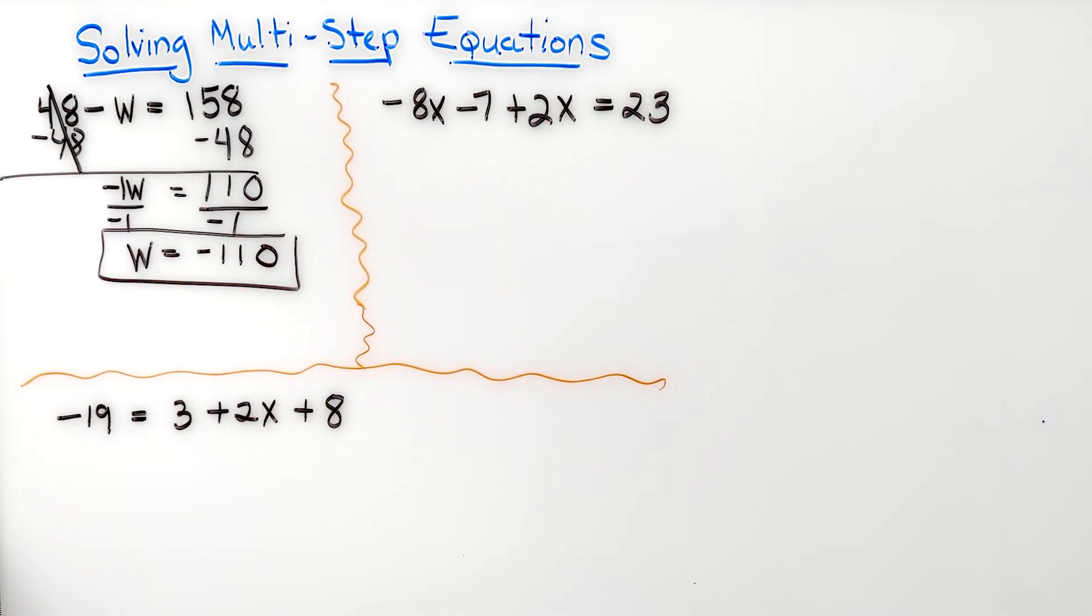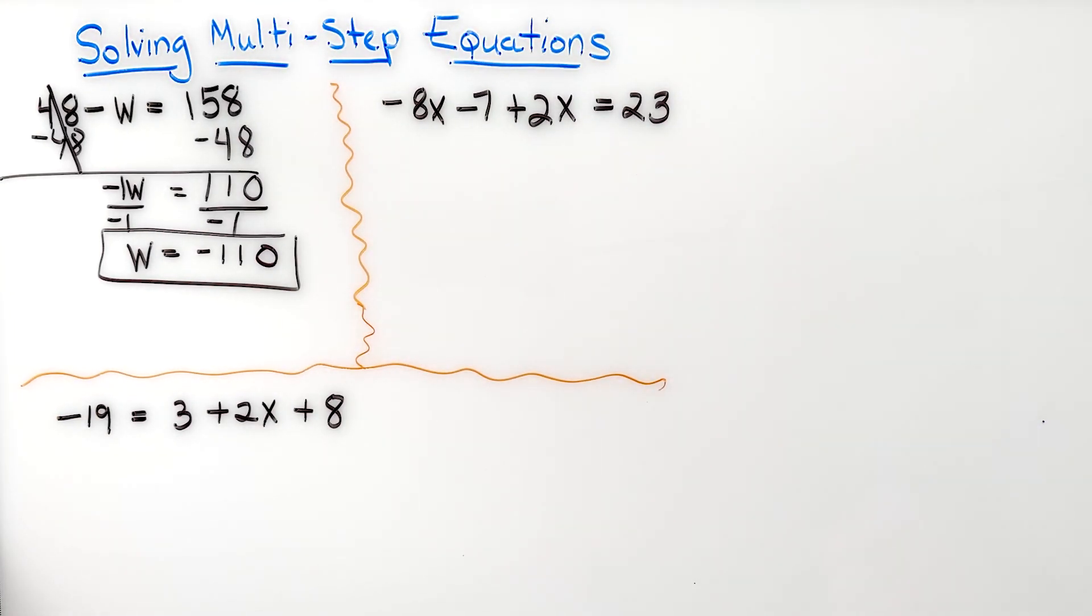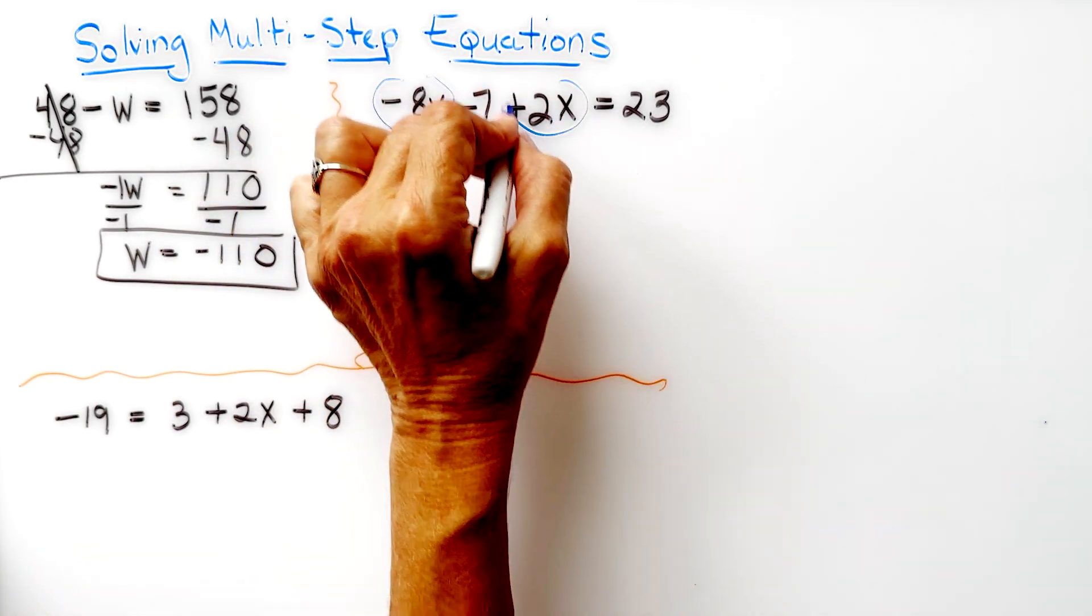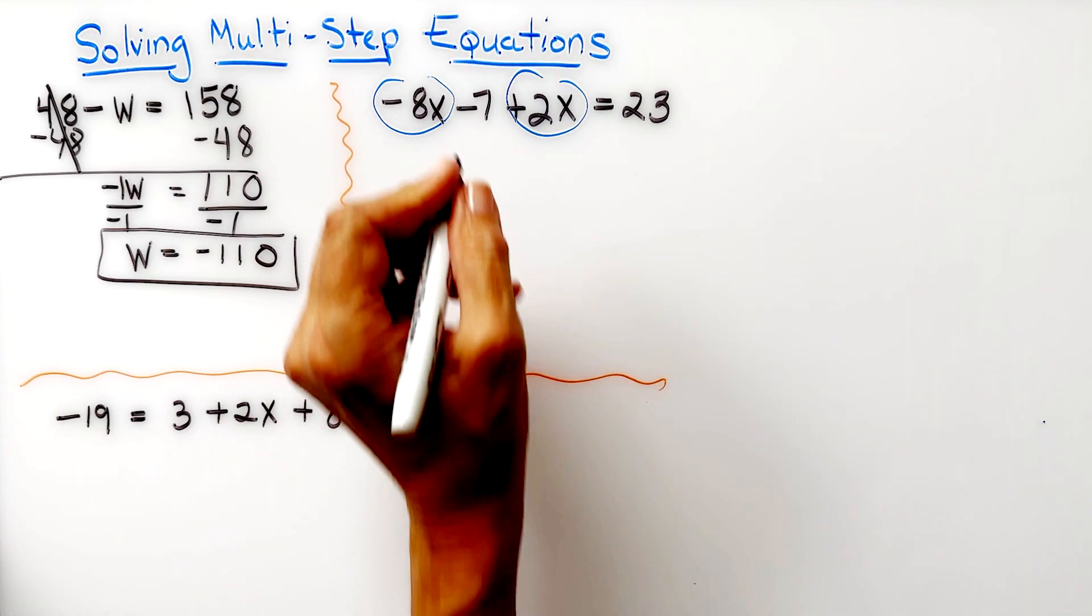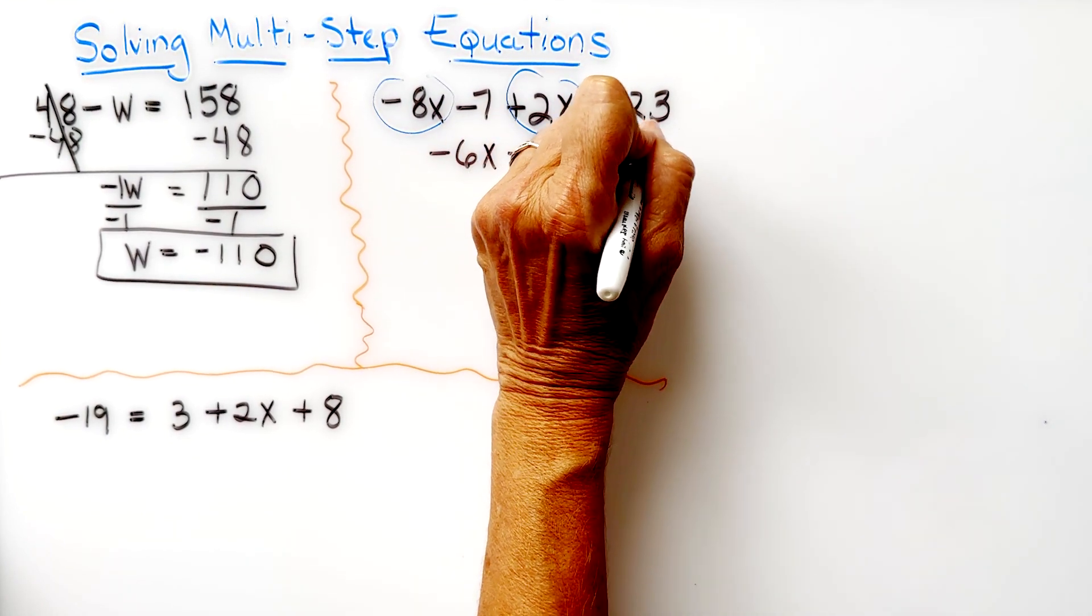I see that I have a negative 8x and a positive 2x. I'm catching the signs in front of those and I end up with negative 6x minus 7 equals 23.